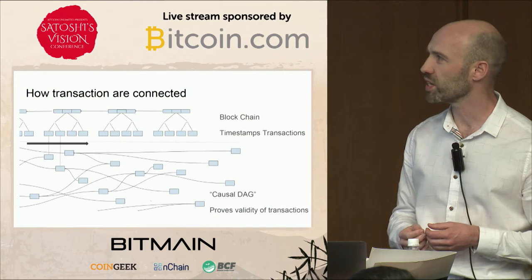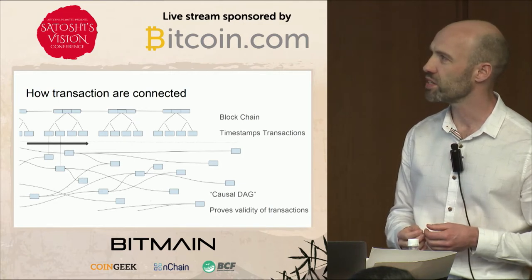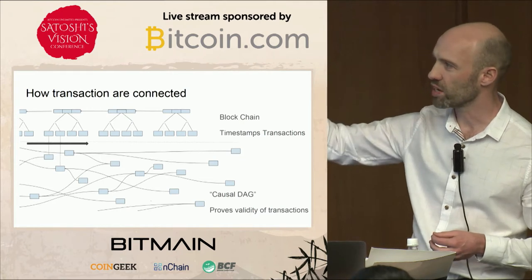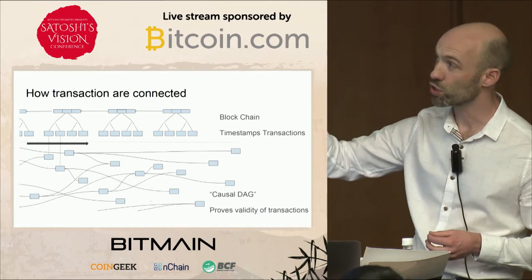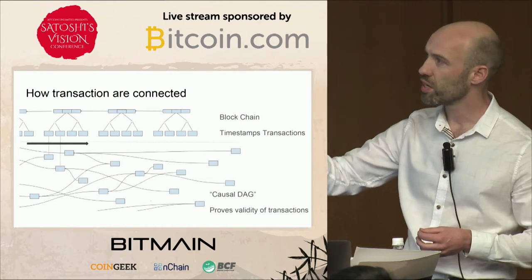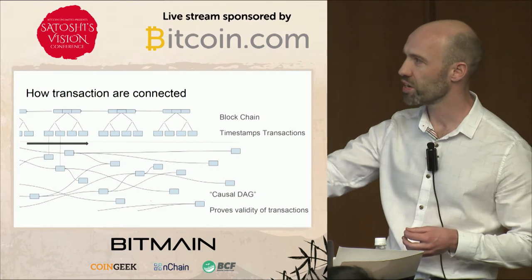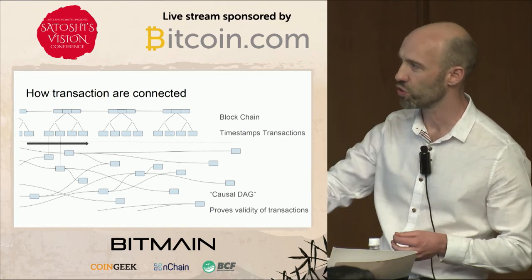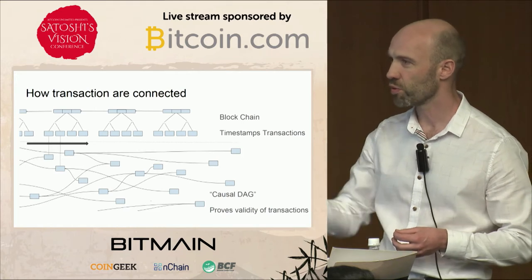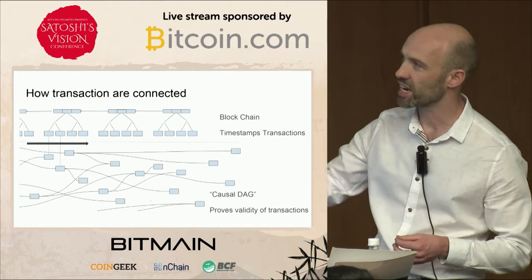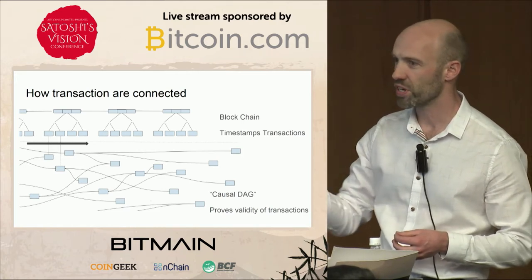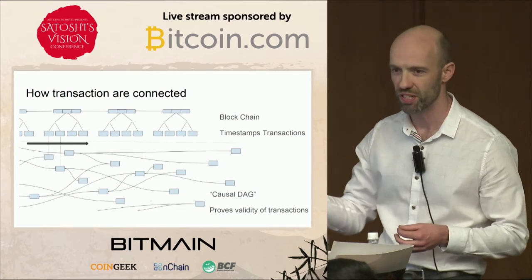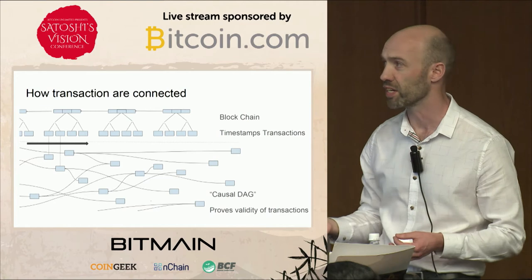The effect of that is if you look at the lower level where they're connected together in a causal way, you can't rearrange them. If you change the order of two transactions where one spends the other, when you scan through linearly and get to it, you'll say this output doesn't exist, so therefore this is invalid, and then the whole thing will fail.